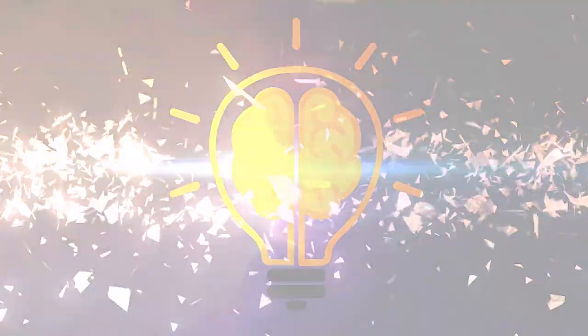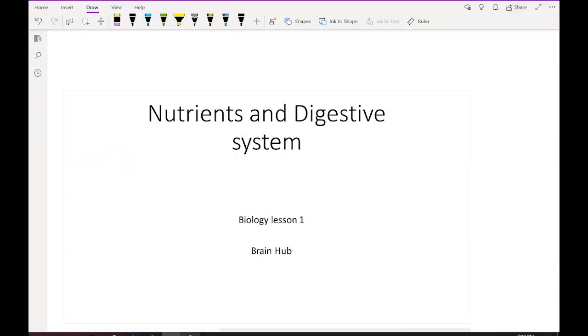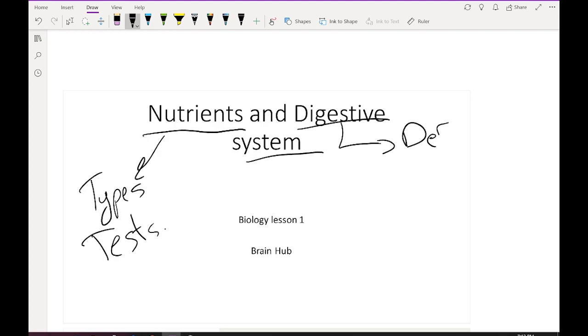Hi, welcome to Brain Hub. This is Grade 9 Biology, Lecture 1: Nutrients and Digestive System. In this chapter, we are going to divide work into two parts. First part is nutrients, where we are going to study types of nutrients and tests that identify each type. In the second part, digestive system, we are going to define the digestive system and study organs and enzymes.